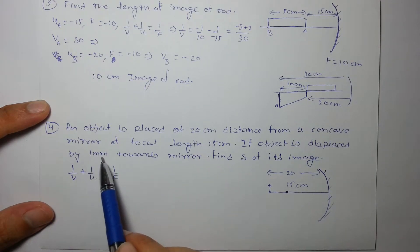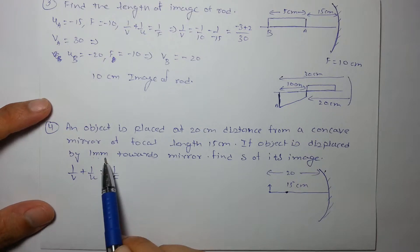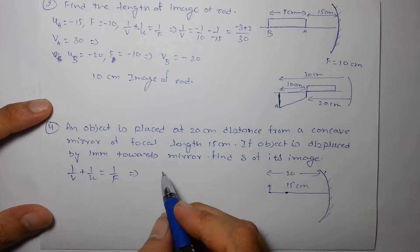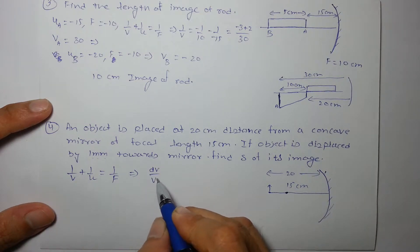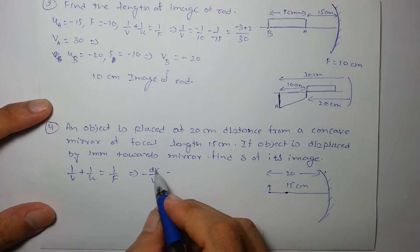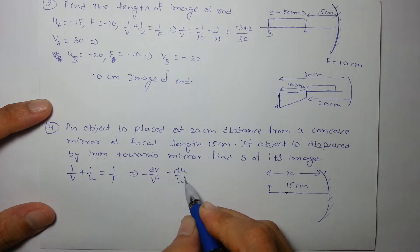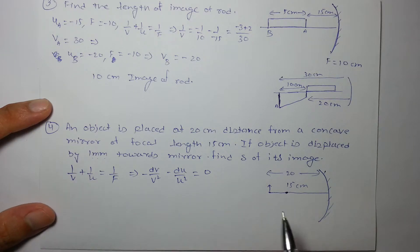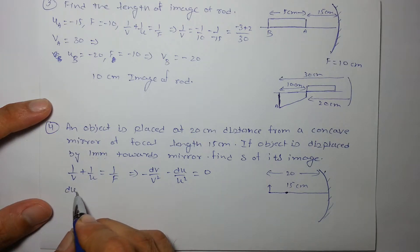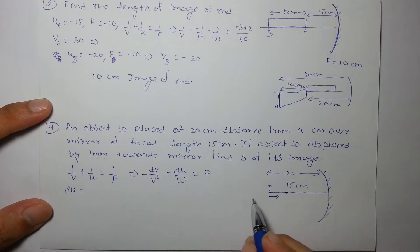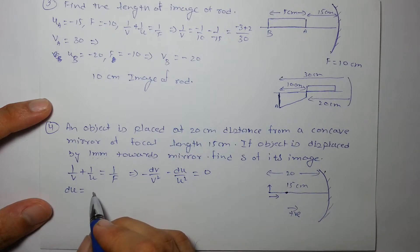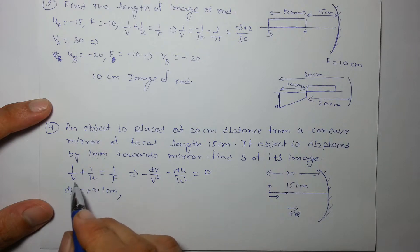The important thing to note is that displacement of object is very small, so we can use this expression. On differentiating I'll get dv/v² with a minus sign, -du/u² is equal to 0 because focal length will not change. And du is given, displacement in the direction of incident ray, so this is positive. dv will be positive, how much? 0.1 centimeter or 1 mm.